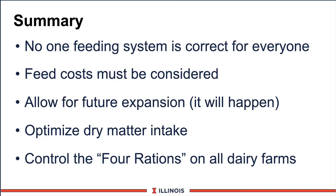In summary, the bottom line is no one system is right for everybody in Illinois, Wisconsin, or across the United States. It really has to fit what is existing on the farm — herd sizes, feed availability, investments, and factors like that. Second, feed costs must be considered. Feed costs make up 30 to 40% of the cost of producing milk, so if my system can keep feed costs lower, that allows for a greater potential for profit and margin. Thirdly, you must allow for future expansion — you may only be milking 100 cows today, but in the next 10 years, you, your son, daughter, or someone who buys the farm will want to milk more cows, so make sure the system allows for expansion. Fourthly, we must optimize dry matter intake — high-producing cows must be able to consume 50 to 55 pounds of dry matter a day. And finally, we must control the four rations we talked about, trying to make them as similar as possible on paper, in the feed bunk, what the cow consumes, and what the cow actually digests in her ration. Well, this completes our module on feeding systems. Thanks, and have a good day.